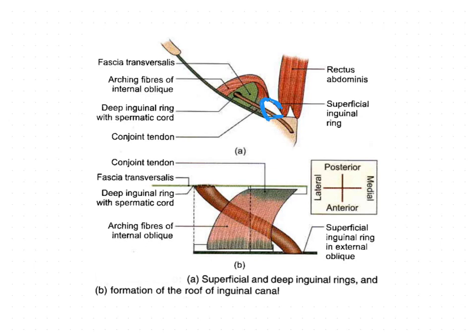The inguinal canal has four boundaries: anterior wall, posterior wall, roof, and floor. The spermatic cord passes through the deep inguinal ring, which is present in the fascia transversalis. The roof is formed by the arched fibers of the internal oblique and transversus abdominis muscles.